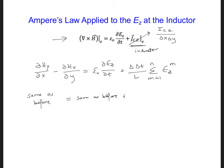Now let's write out this last term. We have delta times delta t over L, and m goes from 1 to n. And ez is going to be at location i, j, k plus 1 half, where our inductor is, and we'll have time step m.